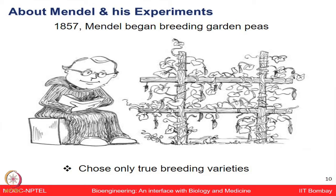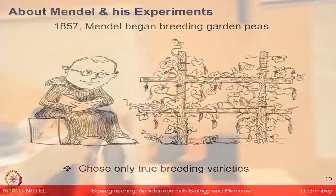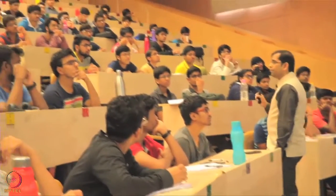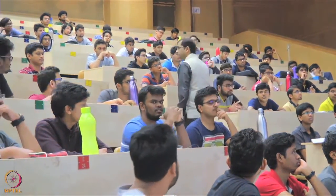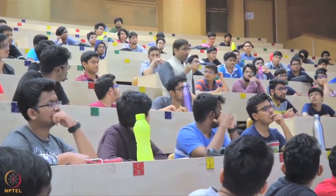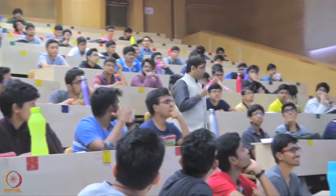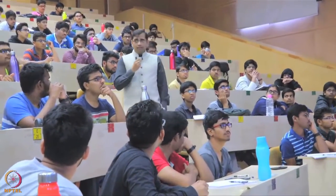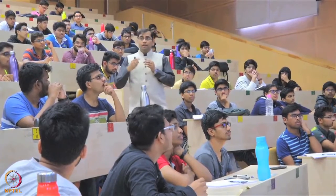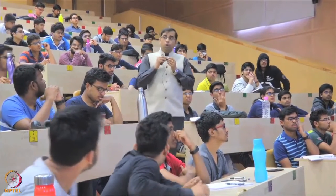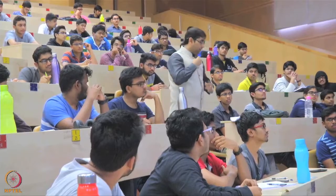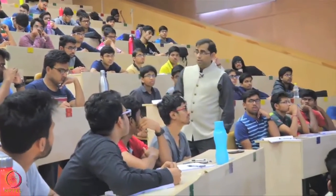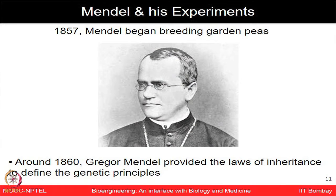He chose only true breeding varieties. What does true breeding mean? It means homozygous — you're ensuring the same characteristics pass from one generation to the next without segregation. If purple-crossed-with-purple keeps producing purple across generations, those are true breeding plants.